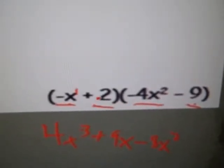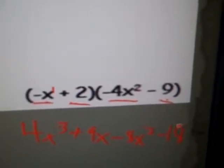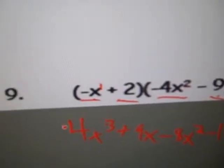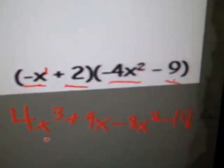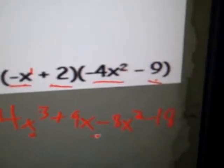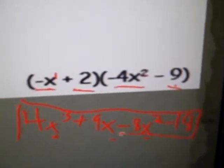And the last, positive 2 and negative 9. You multiply those. You get negative 18. Now in this case, look at our final answer. They have different terms. All different terms. X cubed here. X here. X squared. And a number. We cannot combine any of those. We can just leave this as it is.